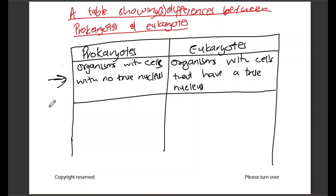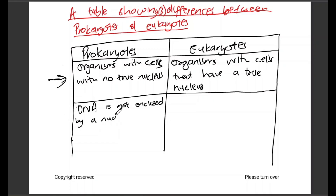The second difference we can speak about is their genetic material. For prokaryotes, the DNA or genetic material is not enclosed by a nuclear membrane — it normally occurs freely in the cytoplasm.